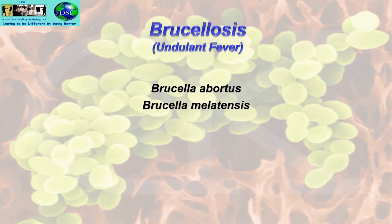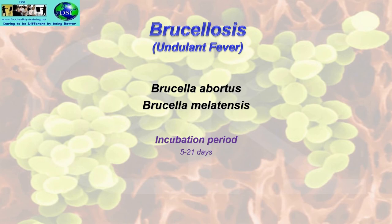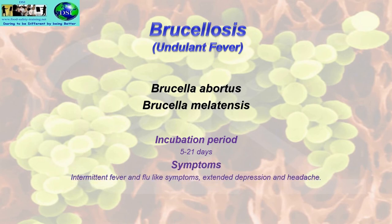Brucellosis is known as undulant fever. The two serotypes that cause the problem are Brucella abortus and Brucella melitensis. The incubation period is 5 to 21 days. Symptoms include intermittent fever and flu-like symptoms, extended depression, and headache.